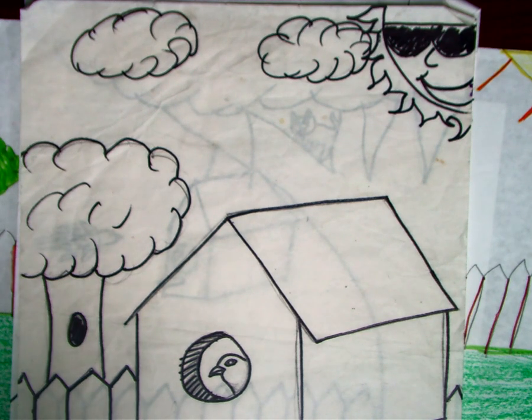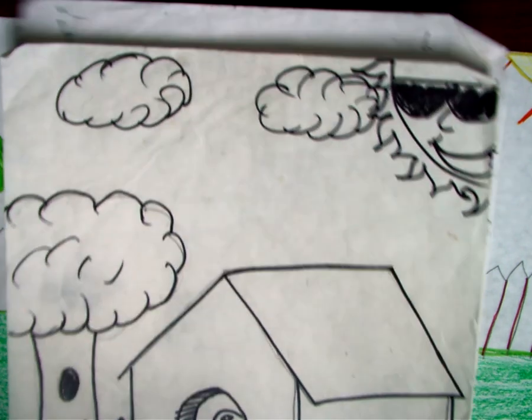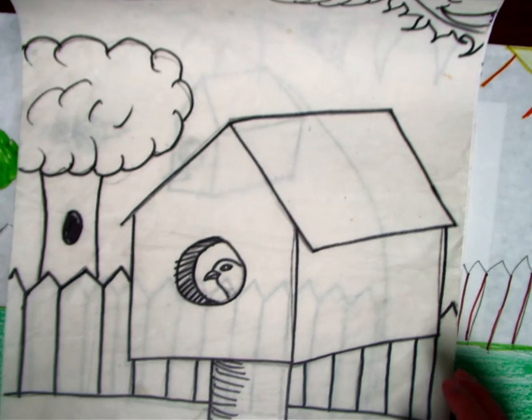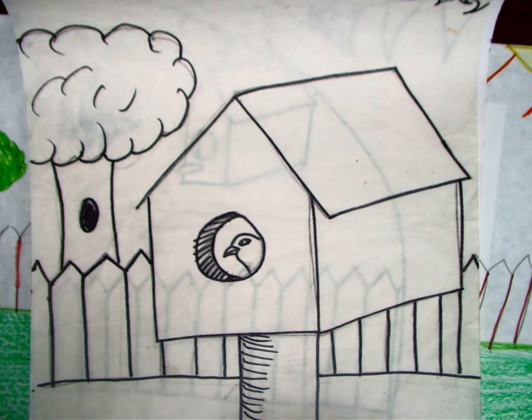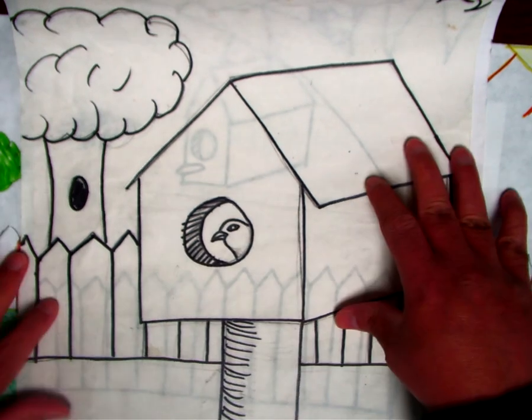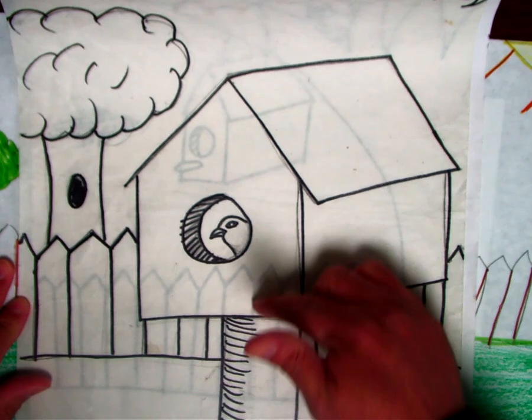Second graders, welcome back. For our next assignment we're going to be drawing a three dimensional looking birdhouse. You can see right here on this first one we have our 3D birdhouse, and this one is sitting on top of a pole.